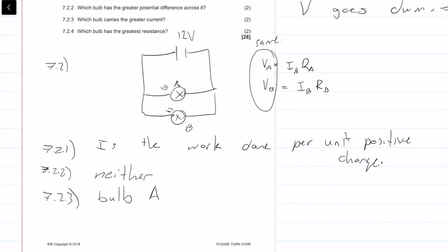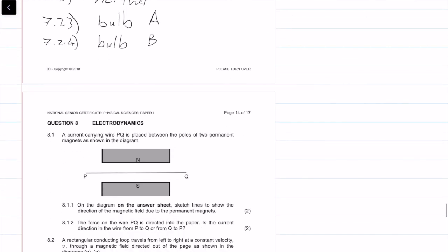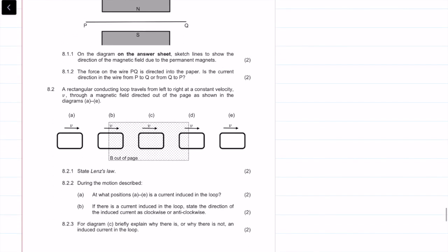Which bulb has the greatest resistance? 7.2 point 4. We know that A has a high current, so it must have a lower resistance. The current through B is lower, so the resistance of that must be higher to balance it out. So bulb B would have the greater resistance. And that is that question done.